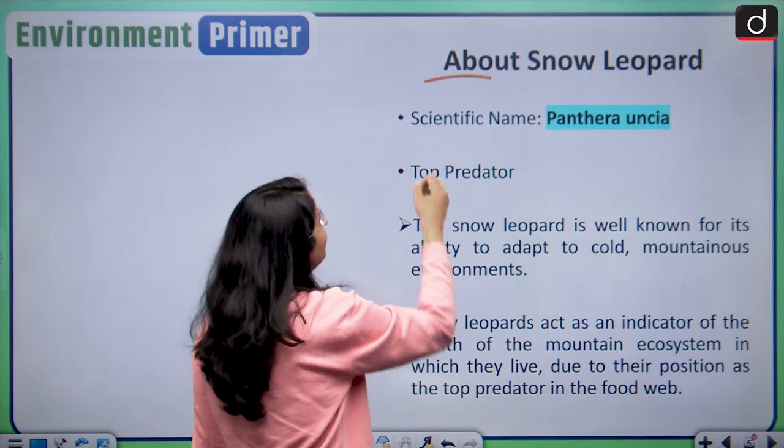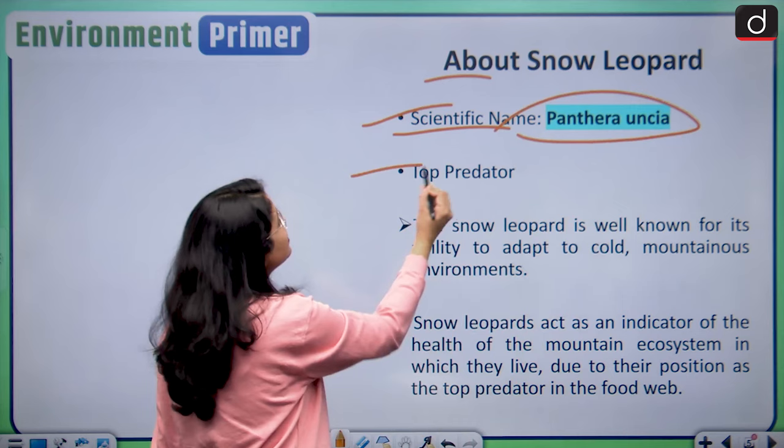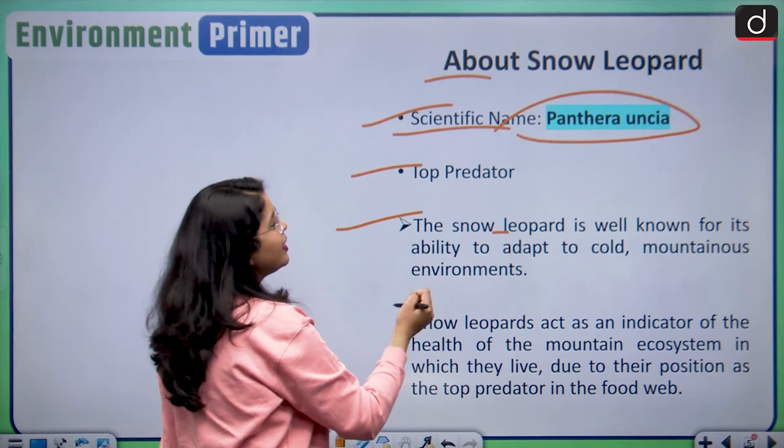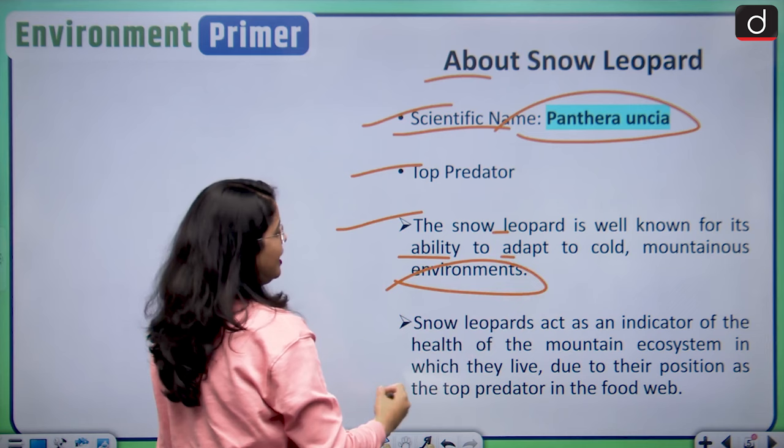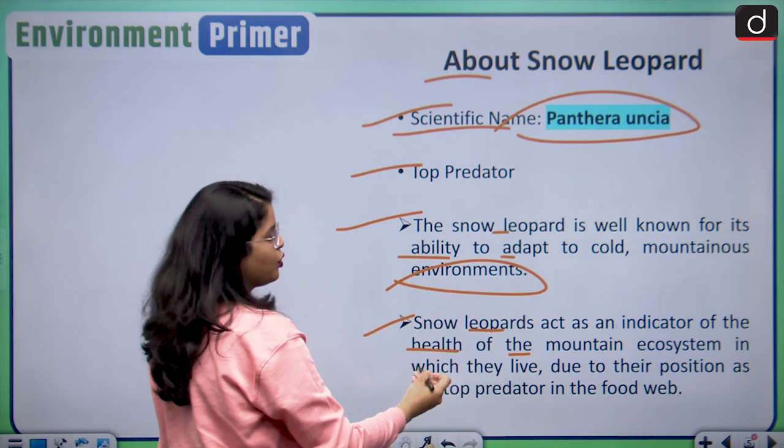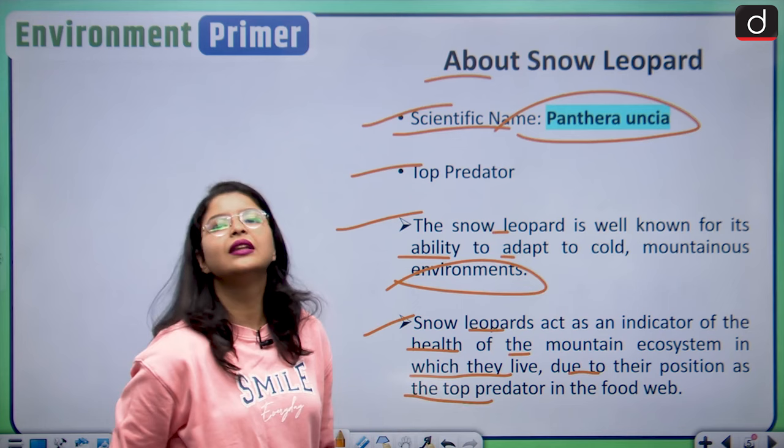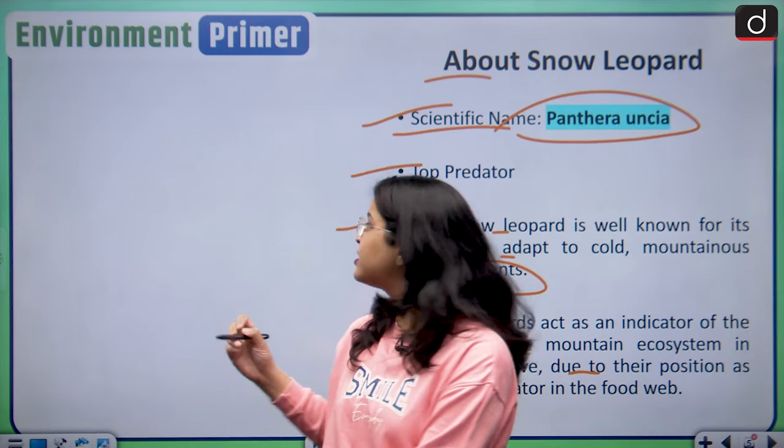What is the protection status of the snow leopards? The snow leopard's scientific name is Panthera uncia and it is the top predator in the food web. The snow leopard is well known for its ability to adapt to cold mountainous environments. Snow leopards act as an indicator of the health of the mountain ecosystem in which they live, due to their position as the top predator in the food web.